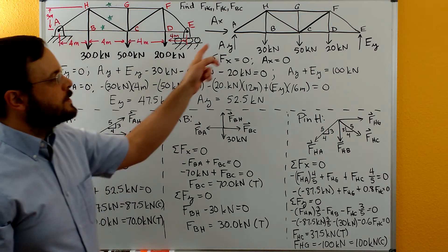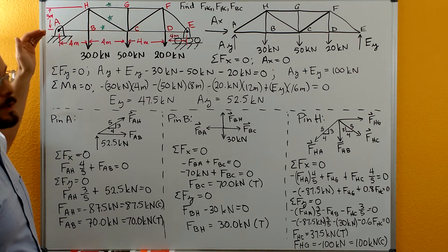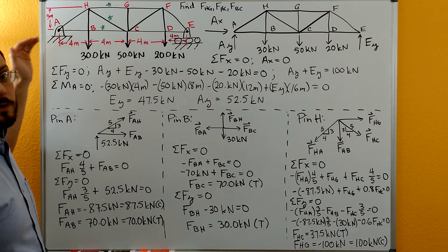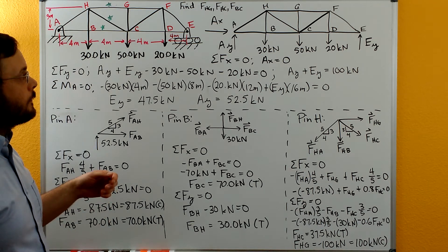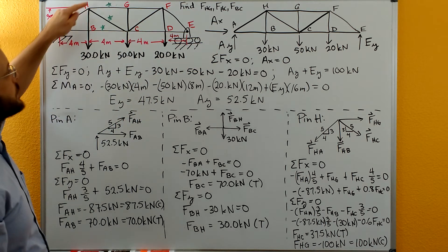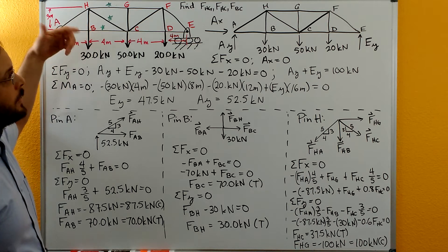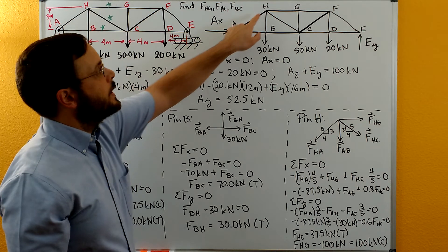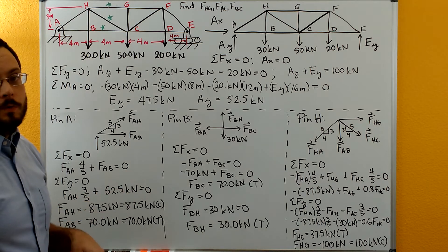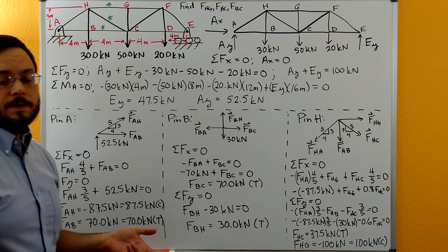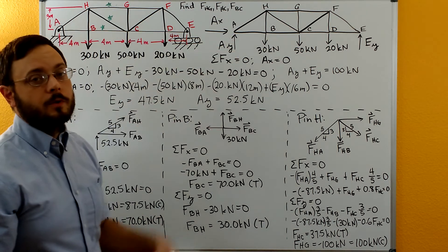Now that we have our reactions on both sides we can start solving. With method of pins we want to start at one side and take pins and go through until we've solved for all the unknowns that we need. We're going to start at A here because A is close to the three members we need to find the force in. Also, A only has two unknowns: we don't know FAH and we don't know FAB. We only get two equations when we do each pin: sum of forces in X equals zero and sum of forces in Y equals zero. That's why we want to start with something where there are only two unknowns.